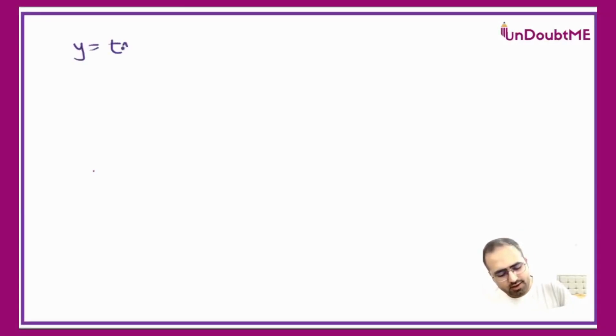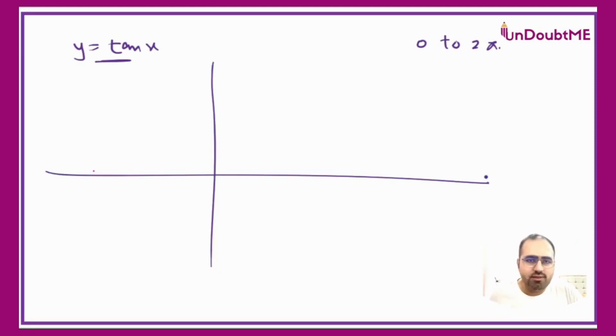The graph of tan between 0 to 2π has a few things we should analyze first. If you look at the four quadrant system, tan belongs to the third quadrant, so tan will be positive in the third quadrant. Tan will be negative in the second quadrant and negative in the fourth quadrant. It will be positive in the first quadrant.